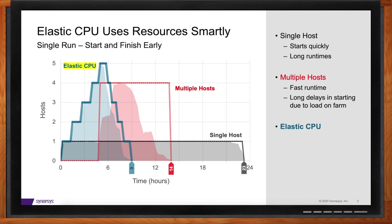In ICV, we solve this problem using Elastic CPU technology. You can start with a limited number of CPUs and add more CPUs later as they become available. This gives you the flexibility to start the job early, so you can finish earlier as more CPUs become available later.